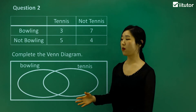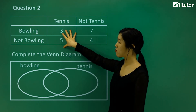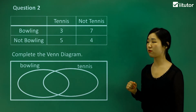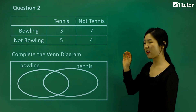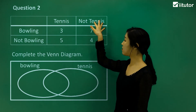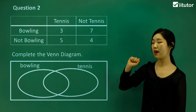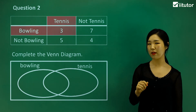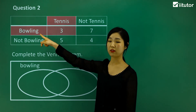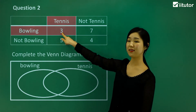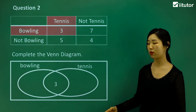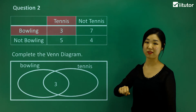This time it's the opposite way — we're fitting information from the two-way table into our Venn diagram. It should be straightforward if you follow the right categories. Bowling and not bowling on one side, tennis and not tennis on the other. Starting with those who do both tennis and bowling, that's three. In our Venn diagram, the overlapping part is for people who do both, so three goes into the overlapping part of the circles.